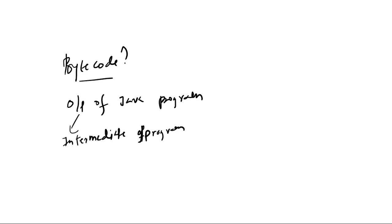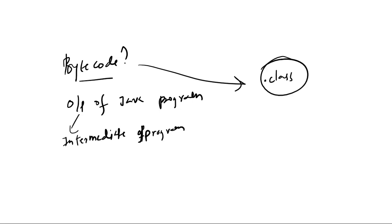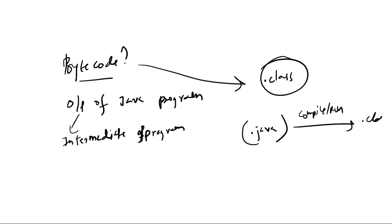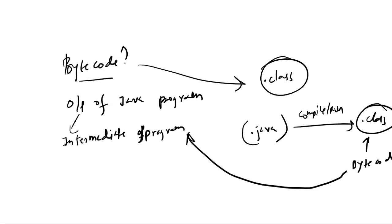This intermediate output, that is the bytecode, is generated in a file which has the extension .class. So when we take our .java file in which we write our Java program and when we compile or run our Java program, we generate a .class file and the bytecode is contained within this .class file.